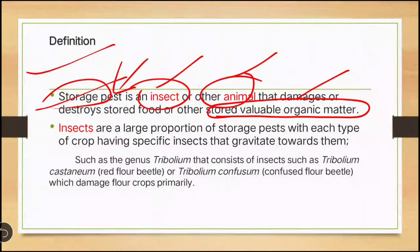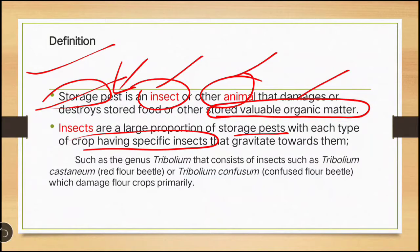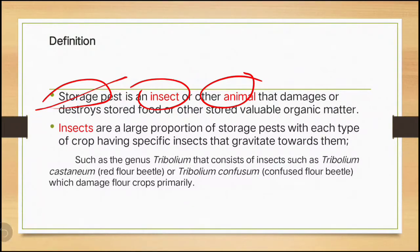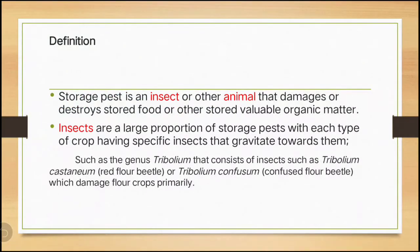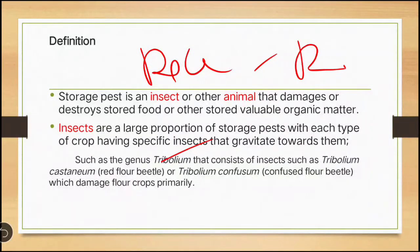Insects make up a large proportion of storage pests, with each type of crop having specific insects that gravitate towards them. For example, if you are storing pulses, the pulse beetle will attack. Tribolium species will also attack. If you are storing rice, the rice weevil will attack. So for specific products, specific pests are there, and among storage pests most belong to insects.